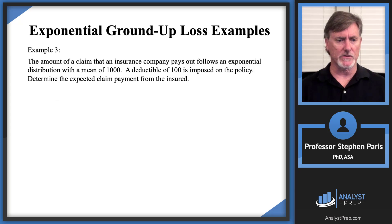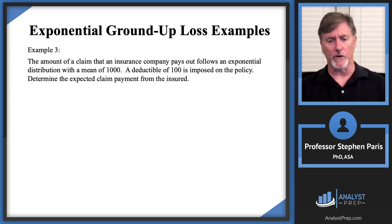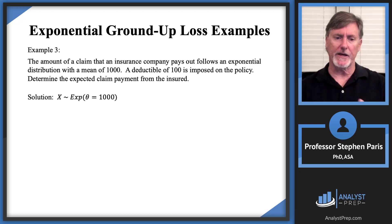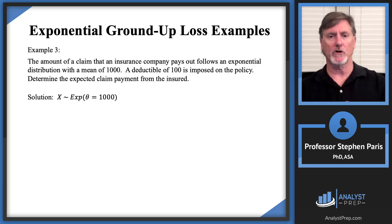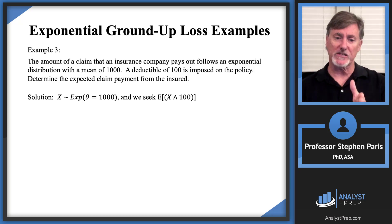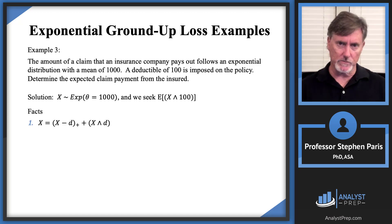Finally, one more example with the same setup — exponential ground-up loss, mean 1,000, deductible 100. This time: what's the expected amount paid by the insured? The insured pays the minimum of the loss amount and 100, which is cap X hat 100. We're looking for the expected value of cap X hat 100.